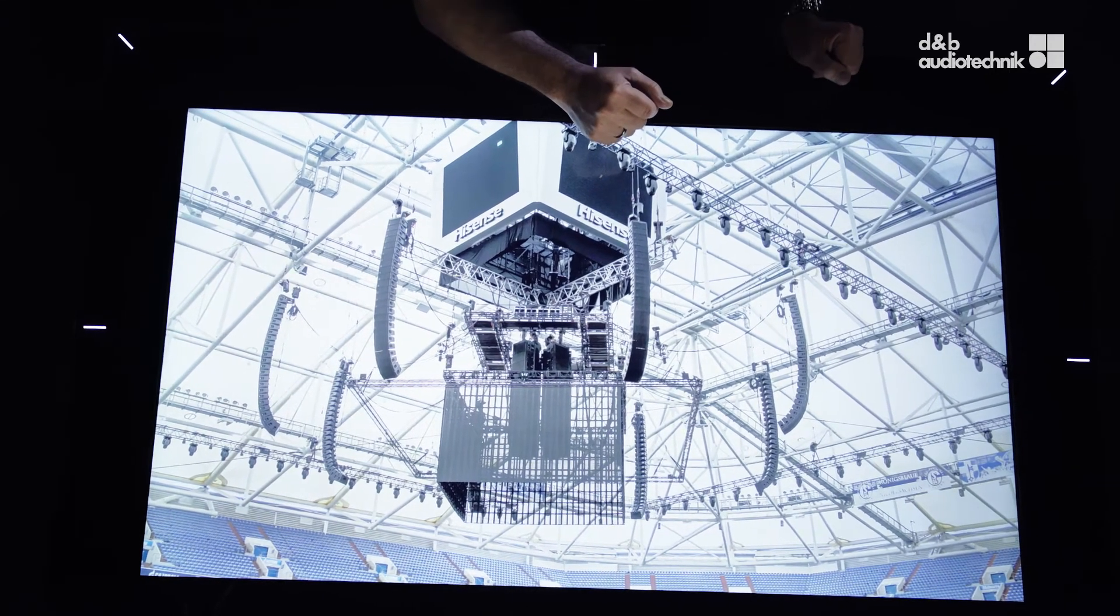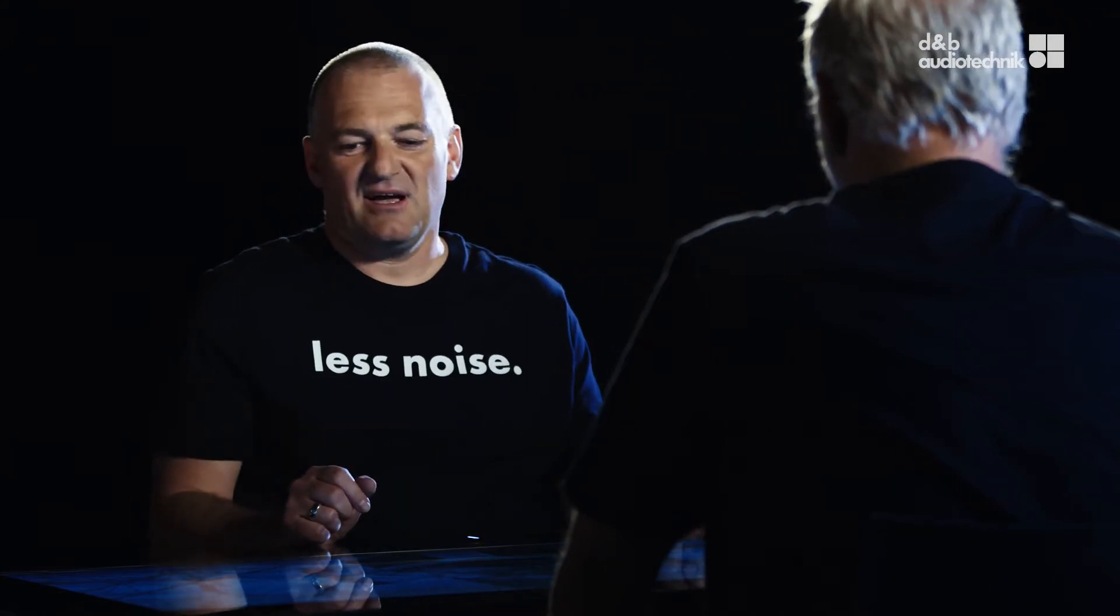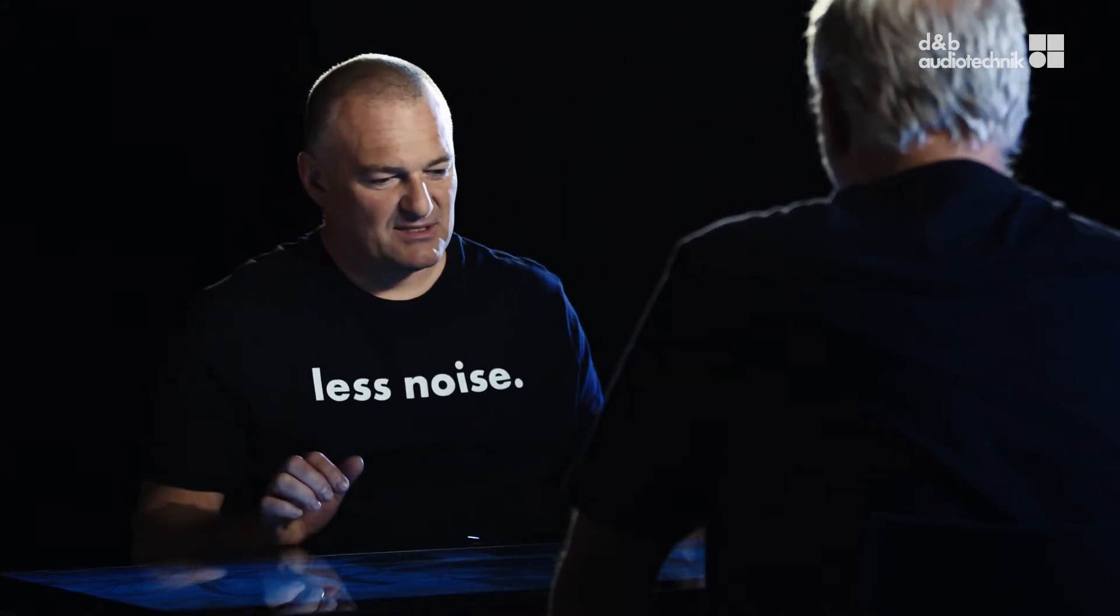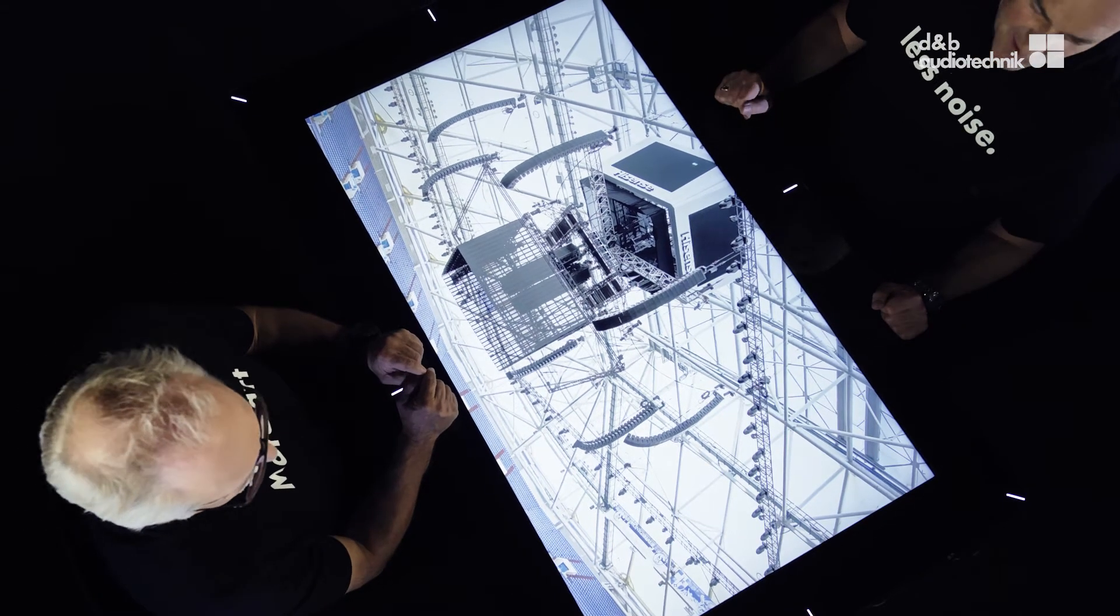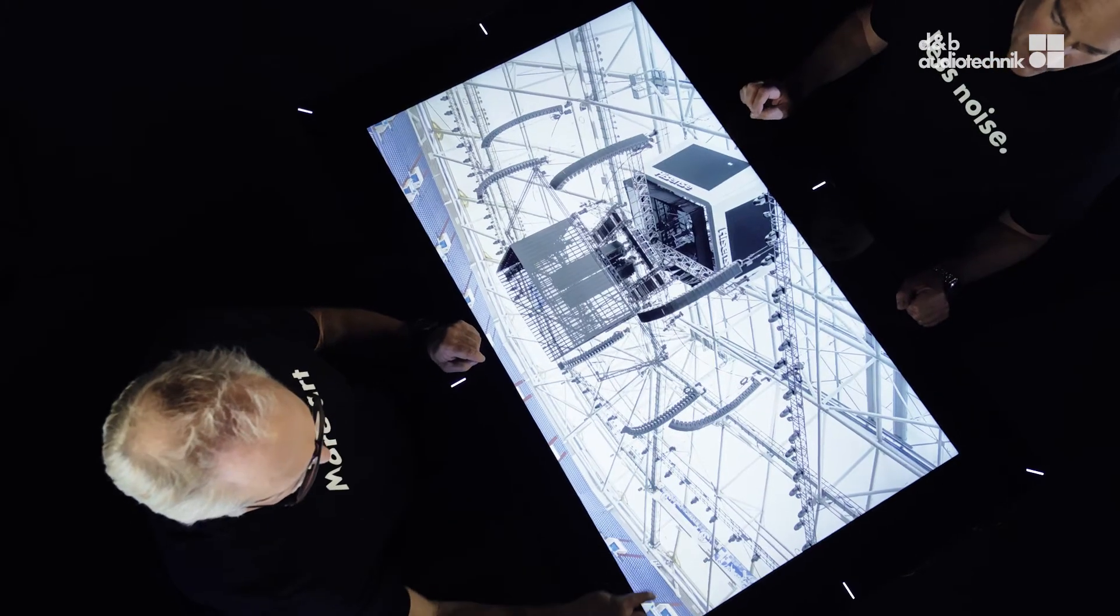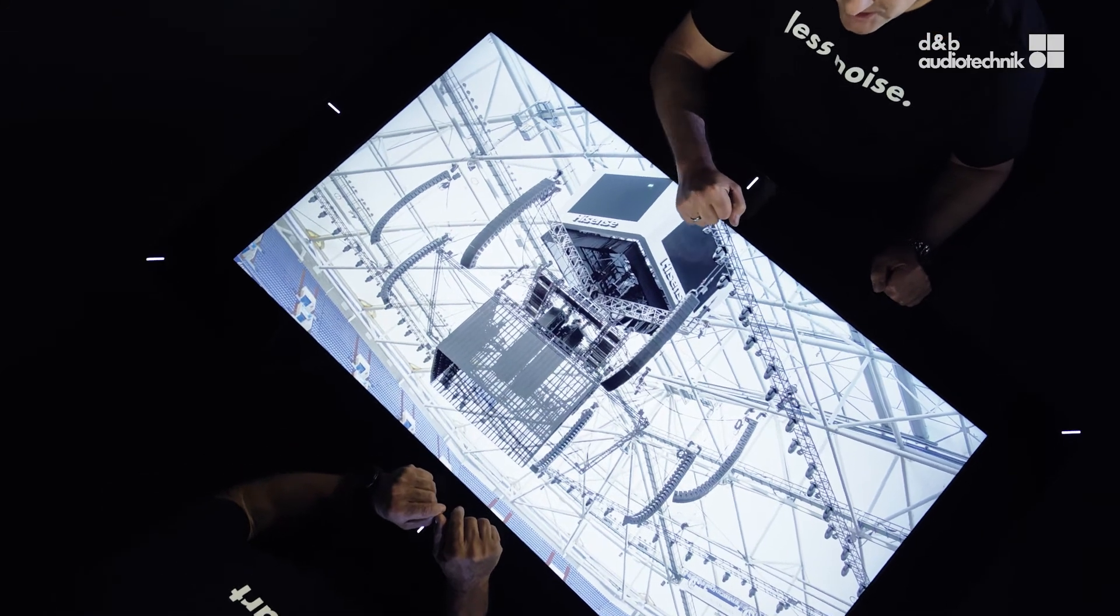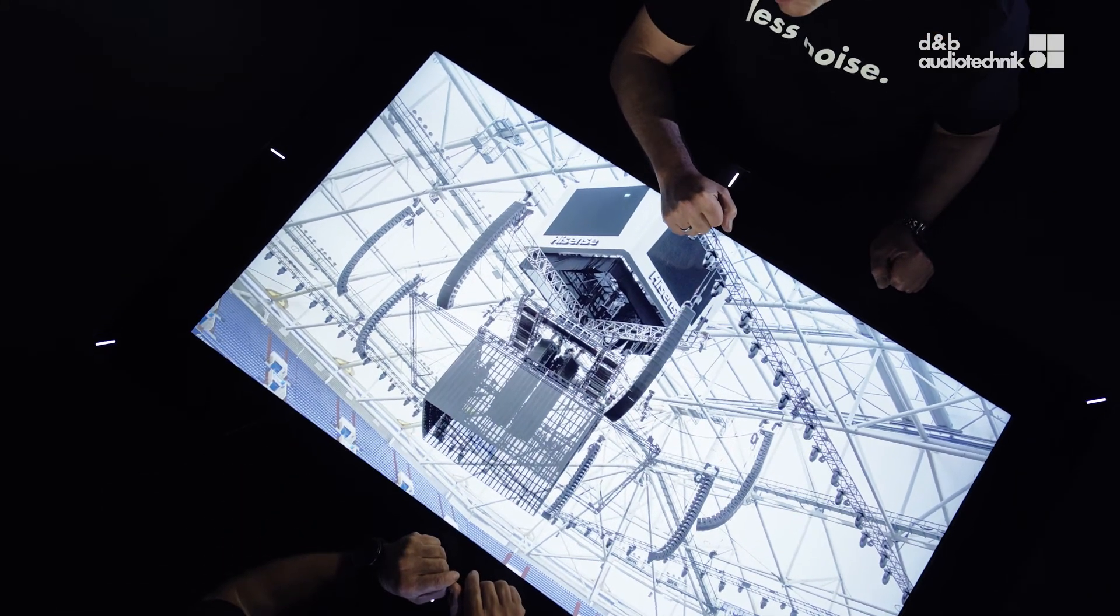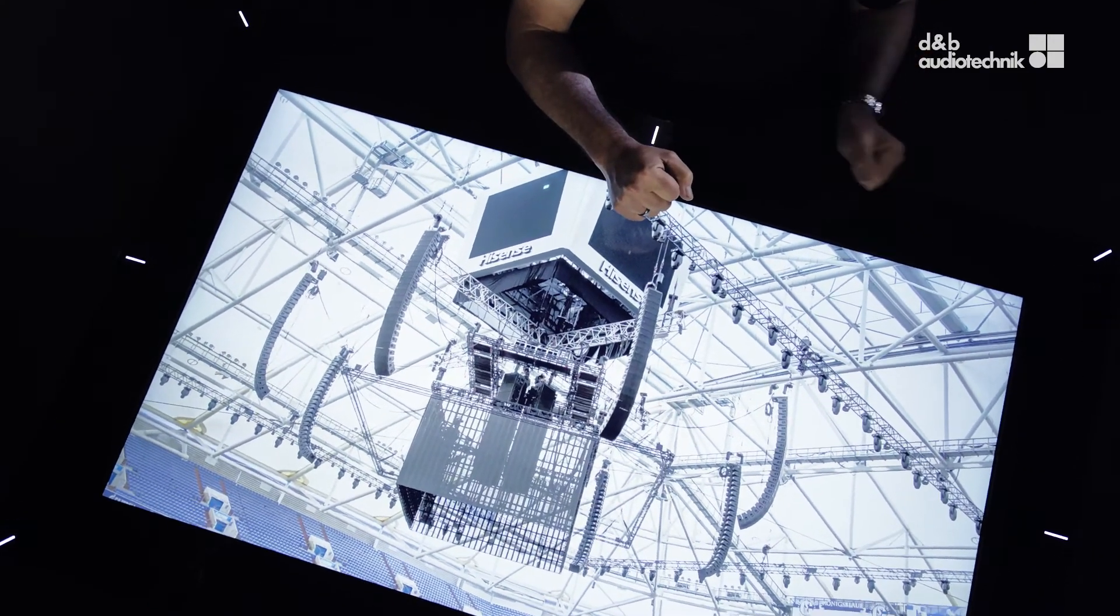Large arenas show a tremendous amount of low frequency reverberation time. Imagine a show in the round where you have several arrays and one of these arrays is pointing at you. The separation between all these arrays works pretty well in the mid and high frequency range but towards lower frequencies you hear the contribution of all the arrays that are placed in the arena.